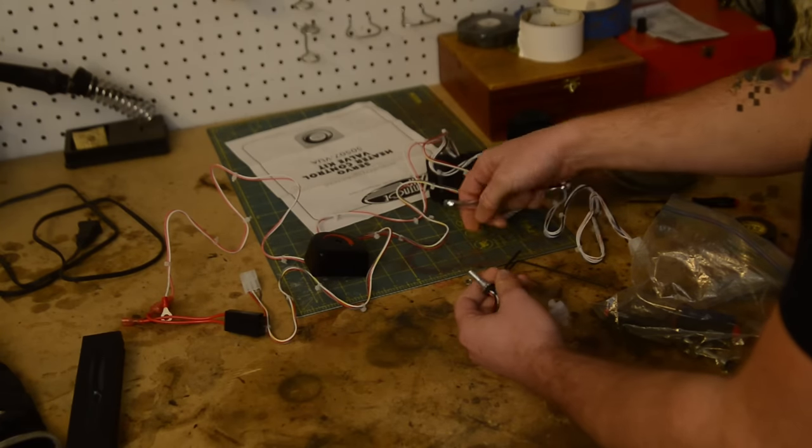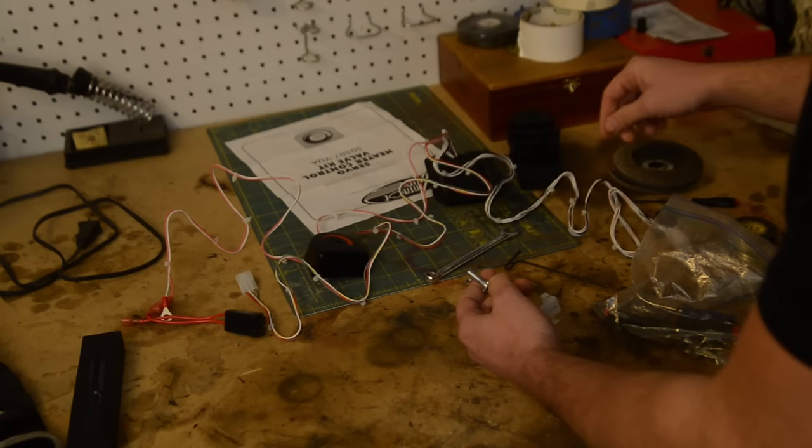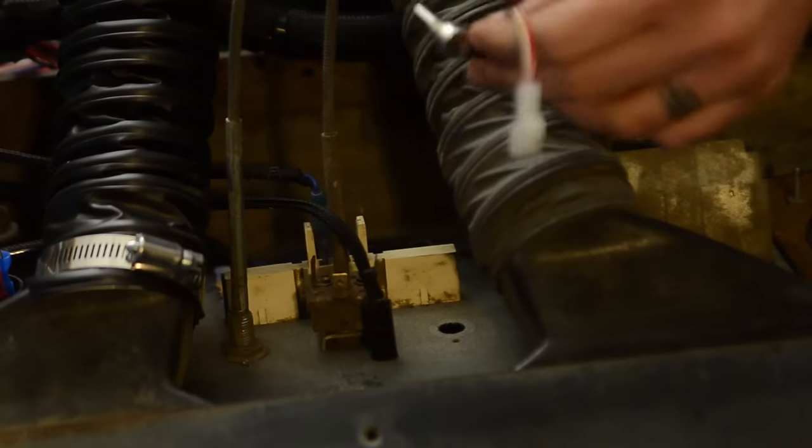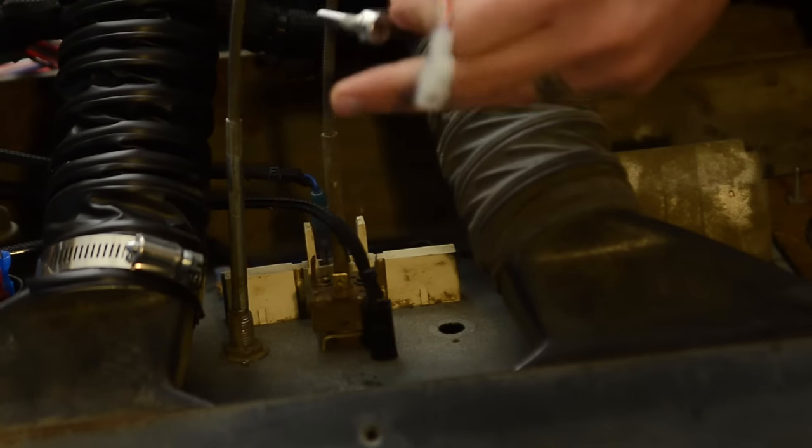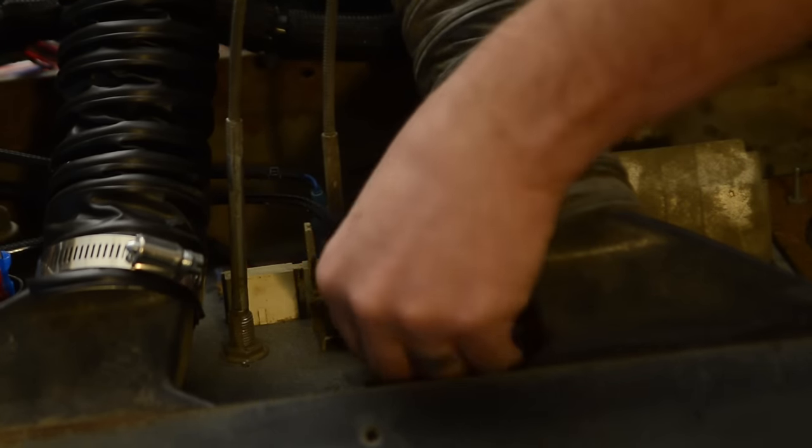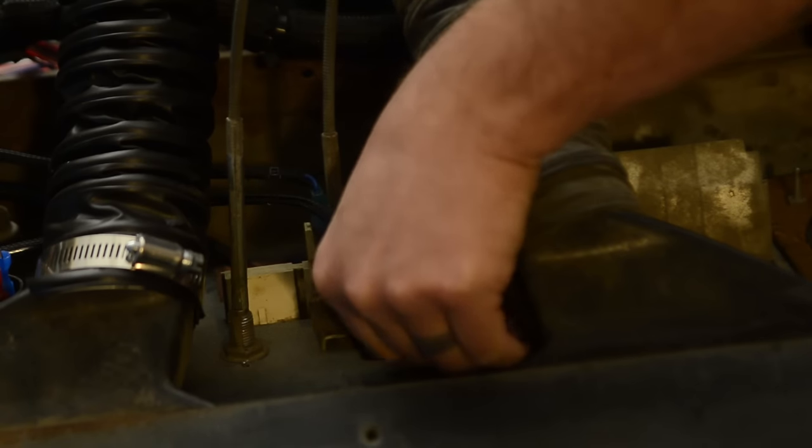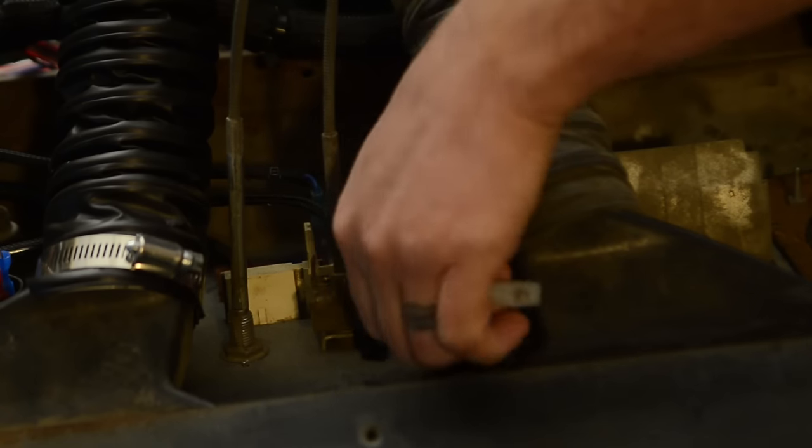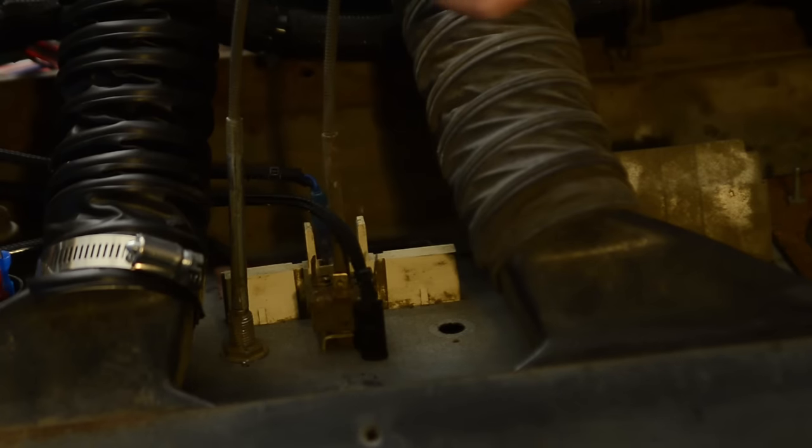All right, so we got that apart. Let's go see if it fits in the dash. All right, so there's the hole in the dash where the pull knob used to be and it looks like the hole is big enough for the new knob, but I think I'm going to need the bezel piece from the original knob.